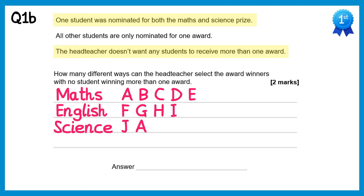Now to solve this question I'd actually suggest working out the opposite. So rather than working out the number of ways when no student wins more than one award, let's work out the number of ways where students do win more than one award. Now there's only one student that could possibly win multiple awards — that's student A. So let's select them for maths and let's select them for science. And then we just have four choices for English: it could be F, G, H or I. So there's one way of selecting the winner for maths, four ways for English, and one way for science, and one times four times one gives you four ways.